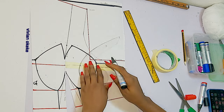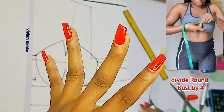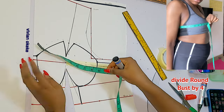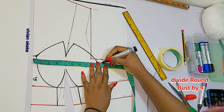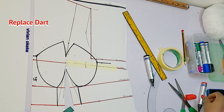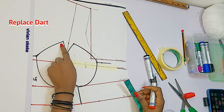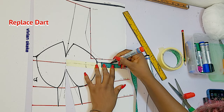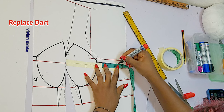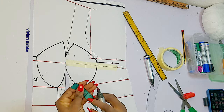Now divide the round measurements by four and mark them on the pattern. For the bust: divide round bust by four — mine is nine inches — and mark it on the new line. Then replace the dart allowance: 0.75 plus 0.75 gives 1.5 inches, so extend the line by 1.5 inches. Then add one inch seam allowance to the pattern.